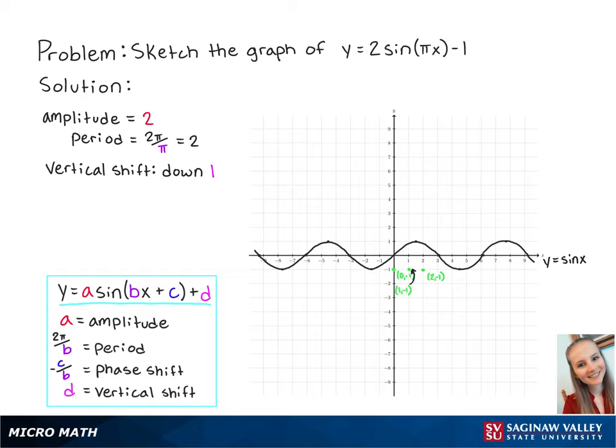The first high point is halfway between the starting point and the midpoint at (1/2, 1). The first low point is halfway between the midpoint and the last point at (3/2, -3). If we continue this cycle to plot additional points, we'll get a graph that looks like this, and this completes the problem.